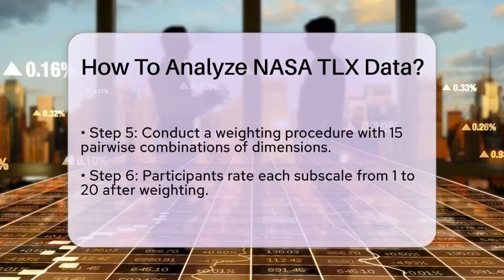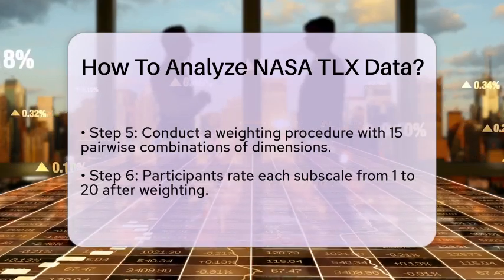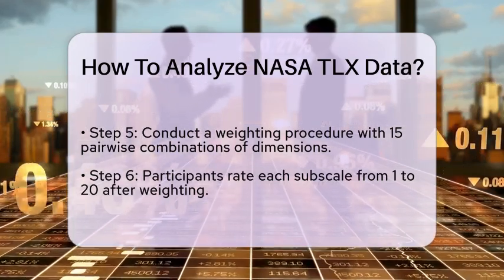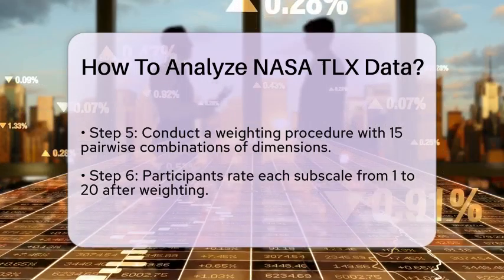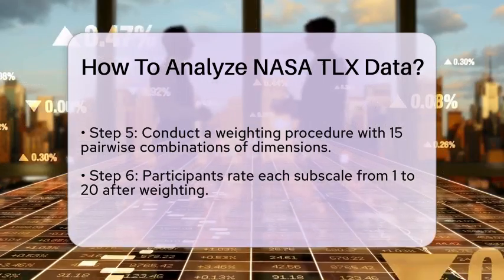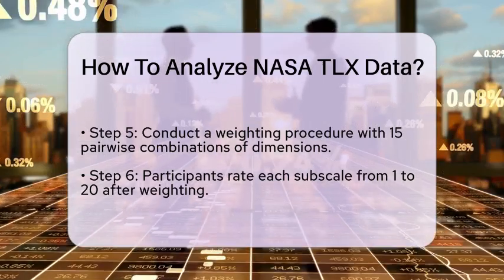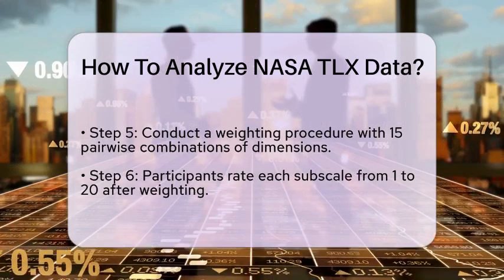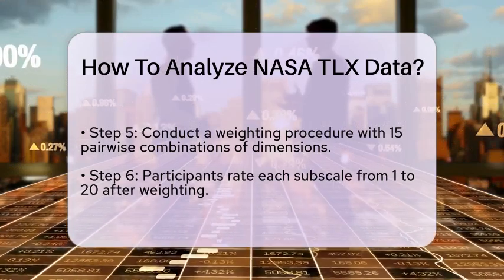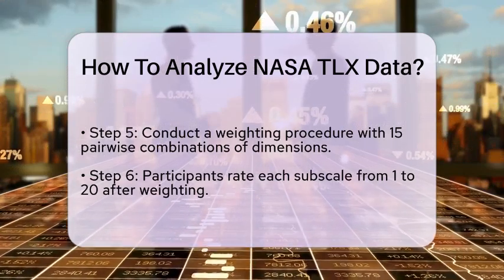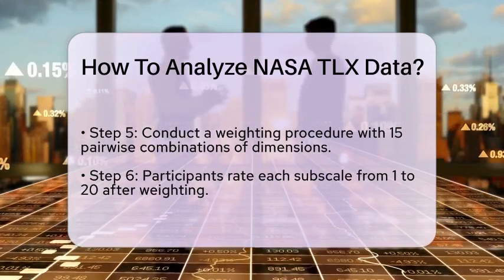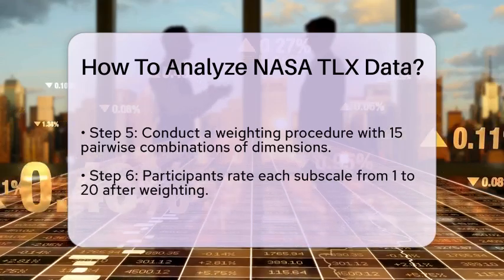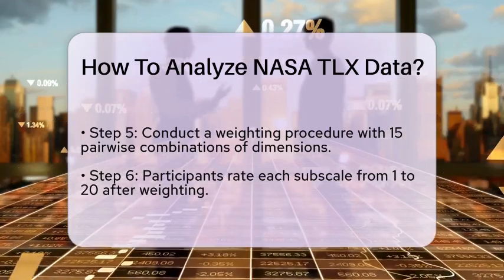Step 7: Calculate the TLX score. Use the TLX software to calculate the overall workload score. This score ranges from 0 to 100. The software multiplies the weighted score of each dimension by the rating score and then divides by 15 to get the final score.